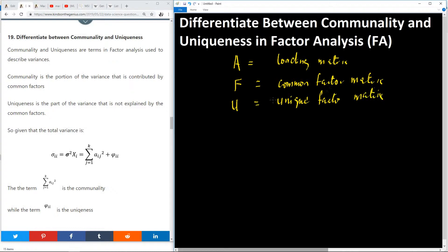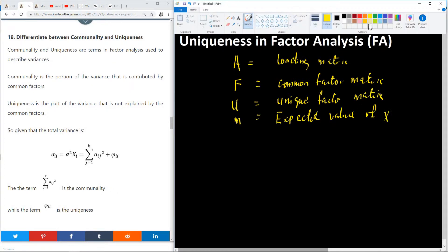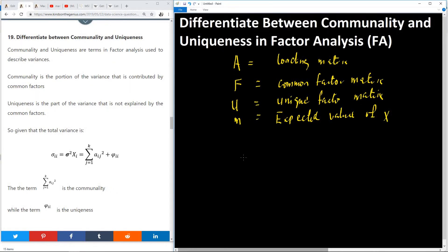All right, so I have M, the expected value of X. Once you are given a set of variables, you can express it in terms of all of these. In factor analysis you express it as X equals A dot F plus U plus M.